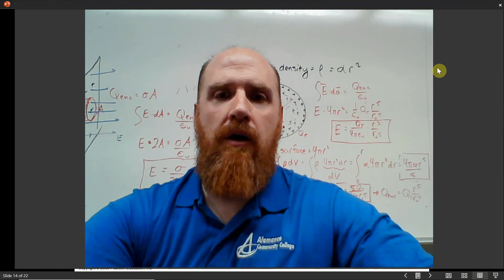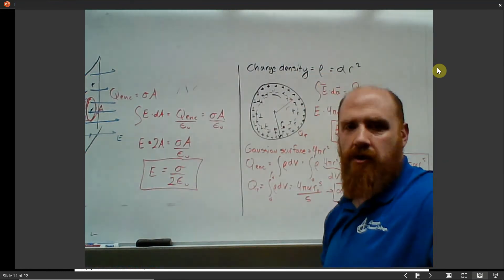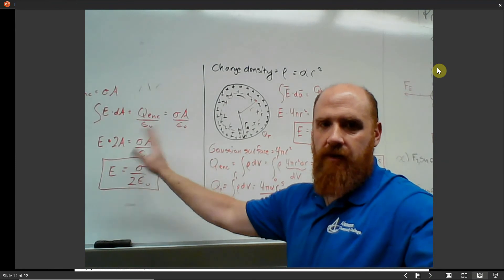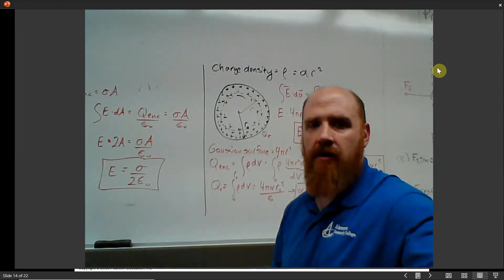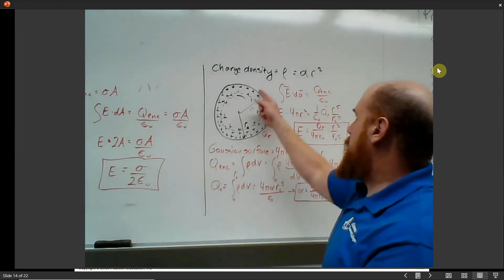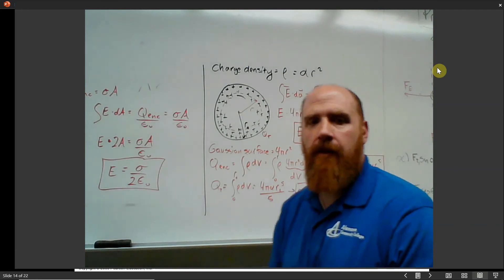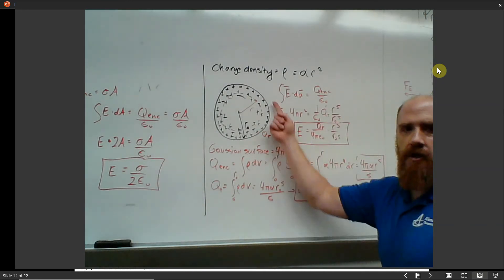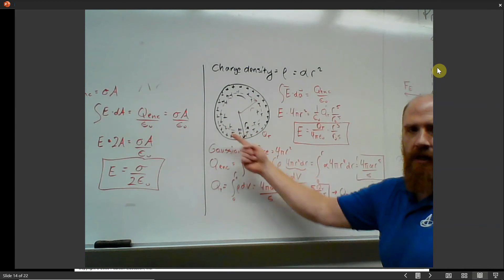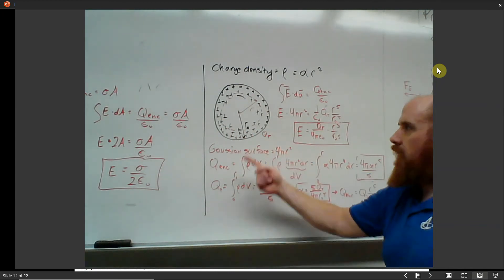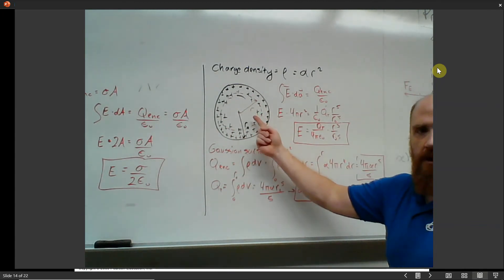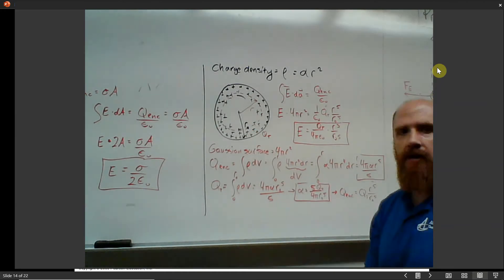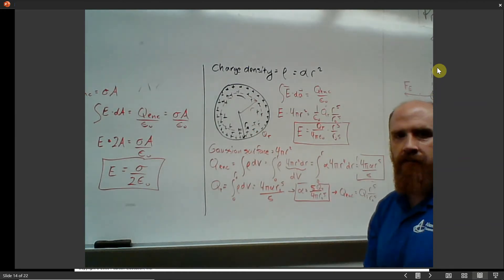Let me zoom in. Here we go. The charge density function is given as rho = alpha*r². Most of the charge is concentrated in the outer part of the sphere. In the equation, r in red is the variable radius, and r-naught is the fixed constant radius of the sphere.